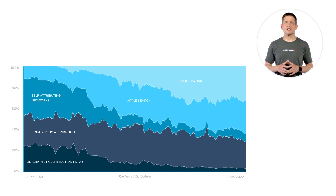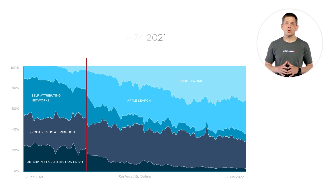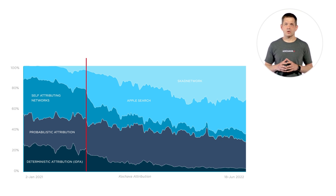So let's take a look at this point here in the chart. This is June 7, 2021 — the crossover point by which most devices were running iOS 14.5 and had the ability to show the App Tracking Transparency prompt to users when they launched the app. It's at this point that the digital advertising world really began to experience seismic shifts.